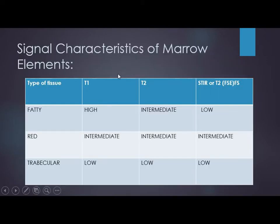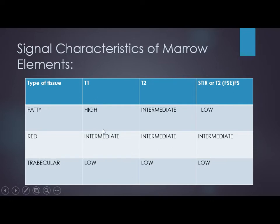As a general rule, signal characteristics of marrow are as follows. Fatty marrow: on T1 it is high; on T2, fat is intermediate; on fat suppression (STIR or T2 fat suppression), it is low. Red marrow is a condition where there is both some fat and hematopoietic tissue. Hematopoietic tissue appears intermediate on all sequences — T1, T2, and STIR. Trabecular marrow, which remains in both red and fatty marrow, appears low on all sequences as a background signal.